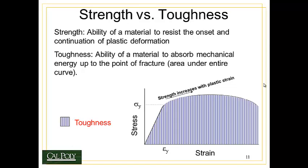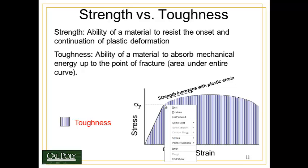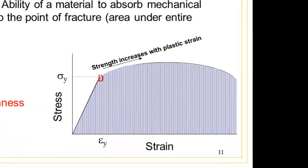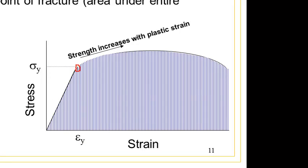Let's talk about toughness first and understand what it is and what it isn't. Remember that strength is the ability of a material to resist the onset and continuation of plastic deformation. Or another way of saying it is that the strength of a material, which we show here, is the stress at which the material goes from experiencing elastic deformation to experiencing plastic deformation. So strength is simply a measure of how much stress it takes to cause something to plastically deform.